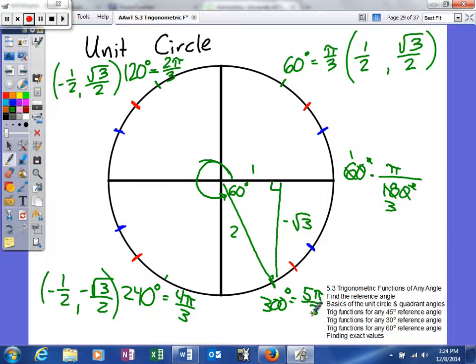And then, as you can see, based on our triangle, we can go ahead and list that. So, it is going to be 1 half. Remember, the x is positive. And then our sine value is going to be negative square root of 3 over 2. And, that's it for our 60 degree reference angle.